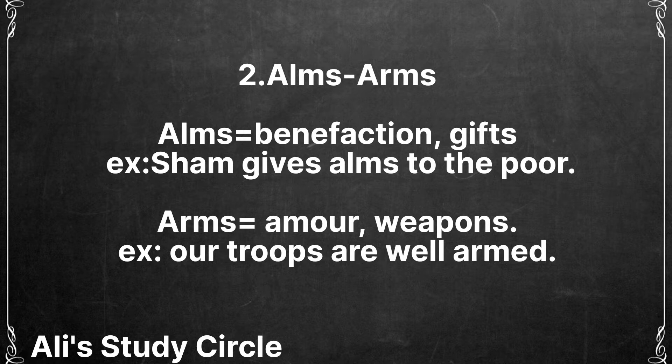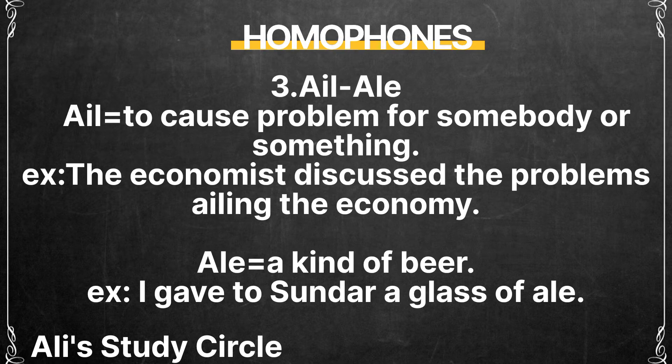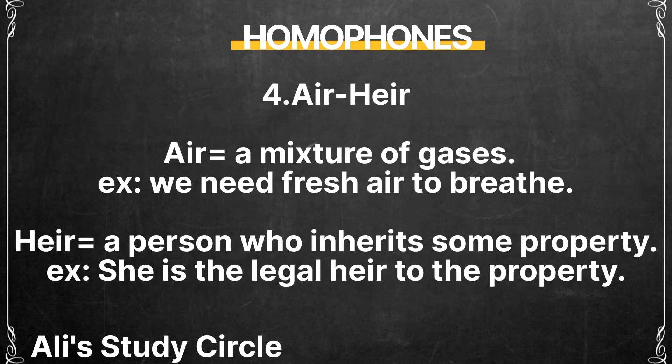The next pair is 'alms' and 'arms.' 'Alms' means gifts or benefaction — for example, 'Sham gives alms to the poor.' 'Arms' means armor or weapons — for example, 'Our troops are well armed.' Next is 'ail' and 'ale.' 'Ail' means to cause a problem — for example, 'The economist discussed the problems ailing in the economy.' 'Ale' is a kind of beer — for example, 'I gave Sundar a glass of ale.'